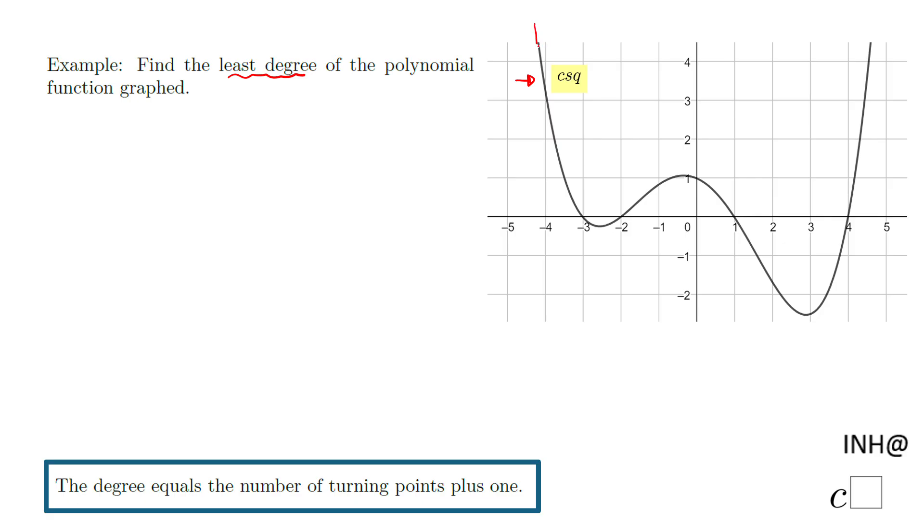If you notice, this function comes from here, going down, going down, going down, and somewhere here it's going to turn. This is a turning point, as we call it. But then it keeps going up, increasing, increasing, if you want to say this way, and somewhere here we have a second turning point.